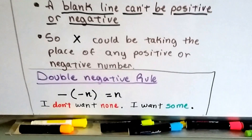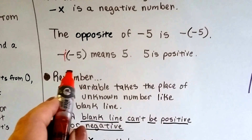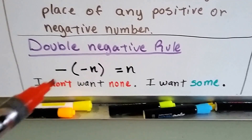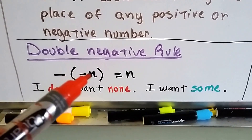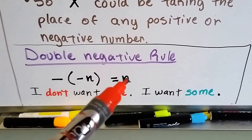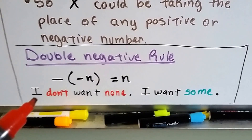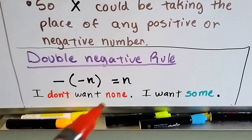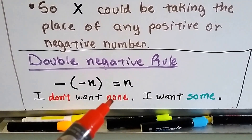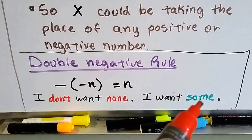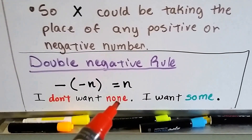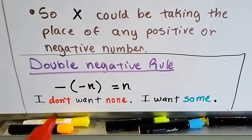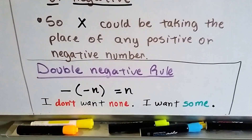There's a double negative rule to explain about this negative outside of the parentheses. When we have a negative outside of parentheses with a negative variable inside, it's going to be a positive variable. It's like saying 'I don't want none' — that's two negatives, a double negative. If you don't want none, then you want some. So two negatives make a positive. That's the double negative rule.